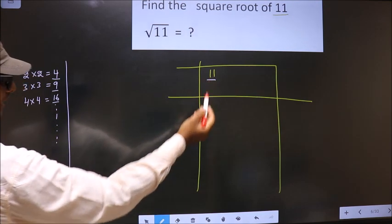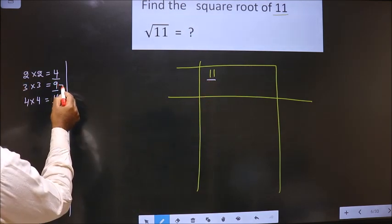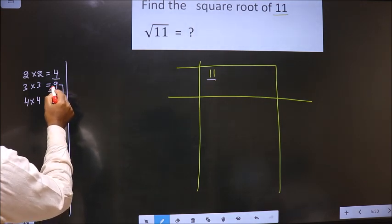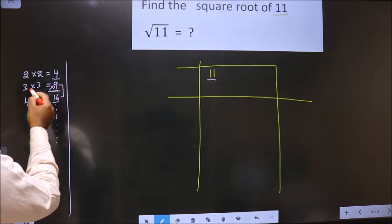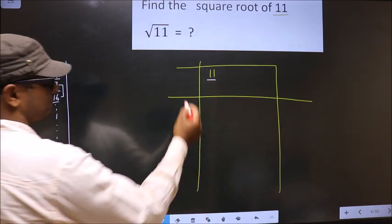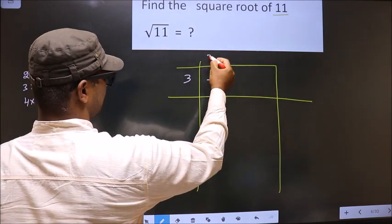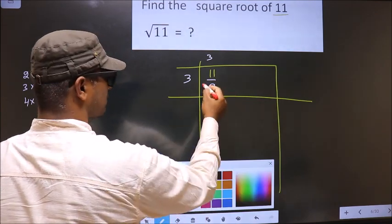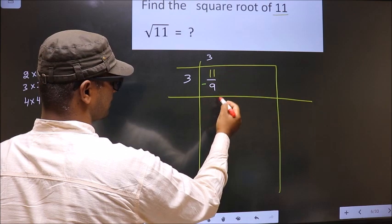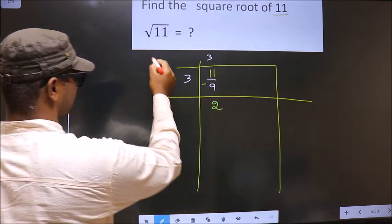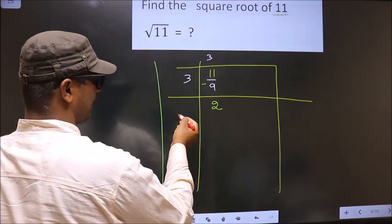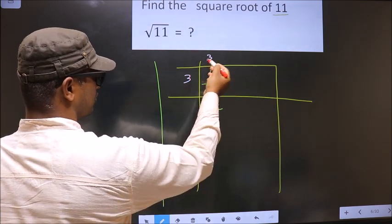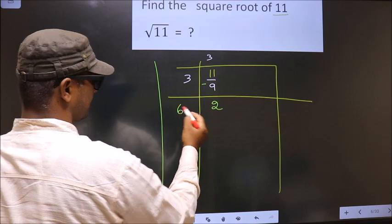Here we have 11. 11 lies between 9 and 16, so we take the smaller number, that is 9. 3×3=9. Now subtract: 11 minus 9 is 2. And here we should add these two numbers: 3 plus 3 we get 6.